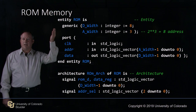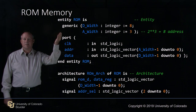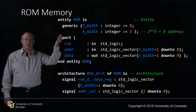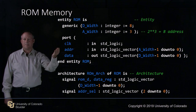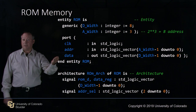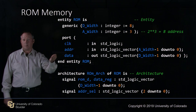Next we will look at generating a ROM memory. Here's our ROM entity. ROM is generic with data width and address width — in this case address width of 3, so 2 to the power of 3 gives us 8 addresses of 8 bits. We have our port declaration: clock, address, and data. Because this is a read-only memory, we will not be writing into it — only reading. Provide an address and a clock and get a data output.